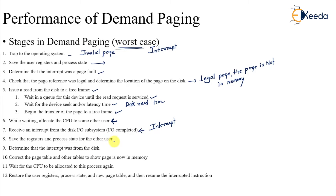Save the registers and process state of the other user. Determine the interrupt from the disk, and correct the page table and other tables to show the process. Wait for the CPU to be allocated to this process again, then restore the user registers, process state, and the new table state.